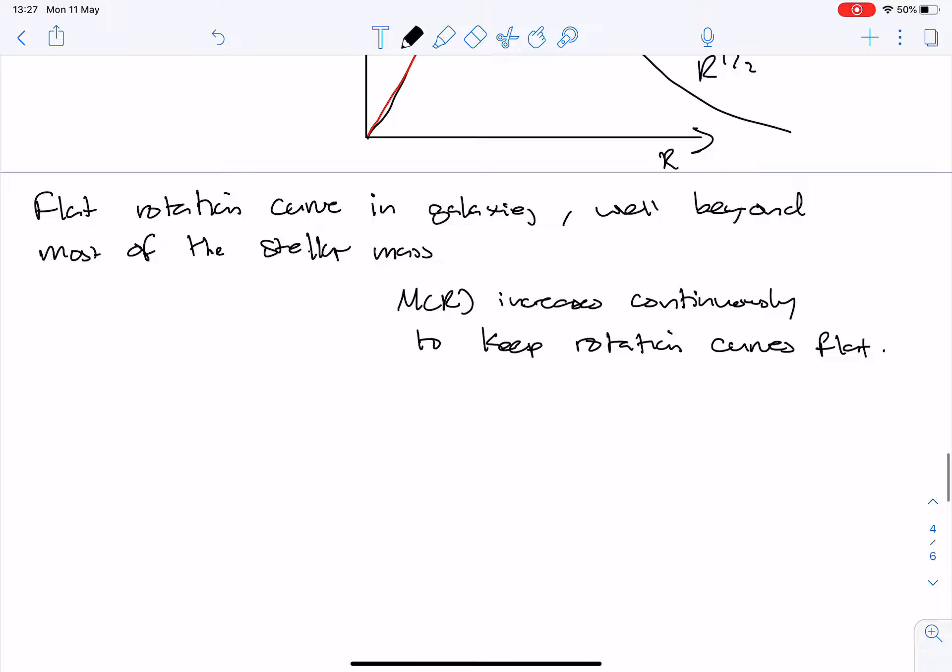And in turn, that means that there is some component that we can't see. And we call that dark matter. And in many galaxies, dark matter is somewhere between even five and even a hundred times the visible matter.